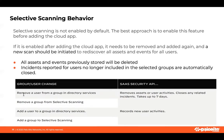Selective scanning is not enabled by default. You should decide if you want this feature before adding your cloud app. If you enable this feature after your cloud app is already added, you must delete the cloud app instance, then reconnect the cloud app to SaaS Security API and initiate a new scan to rediscover all assets and events for all users. In that case, all assets and events will be deleted and incidents reported for users will be closed and no longer included in the selected groups.